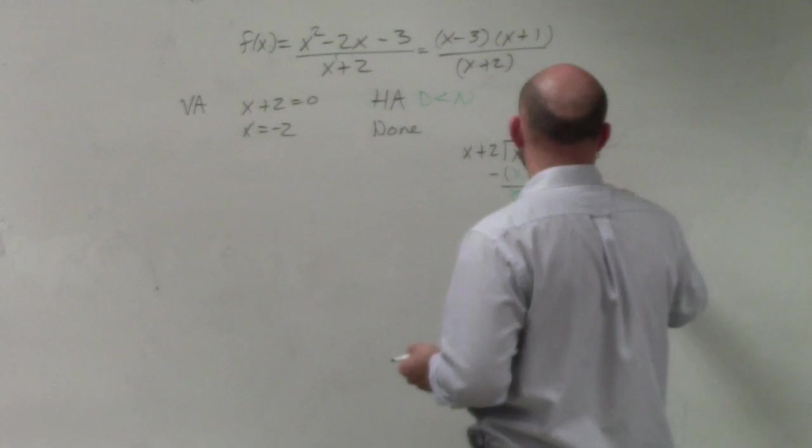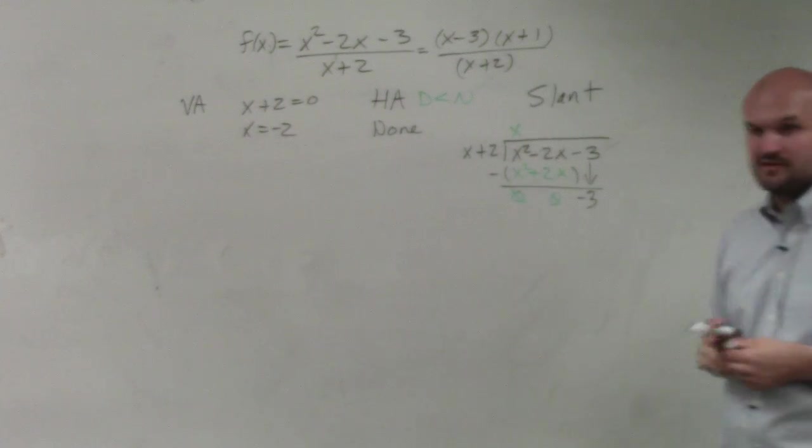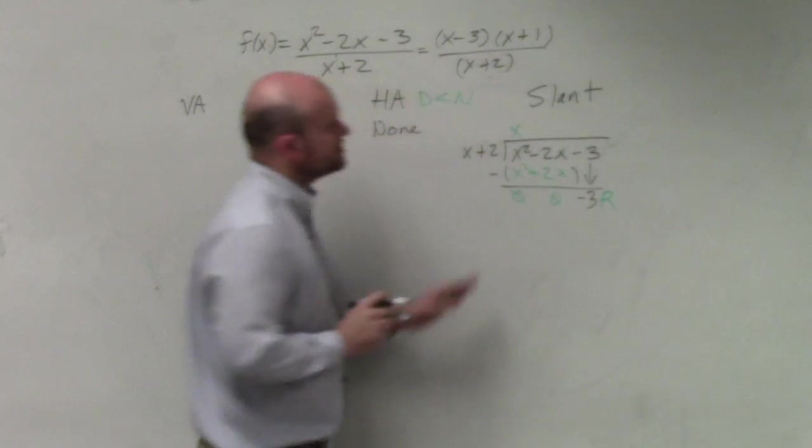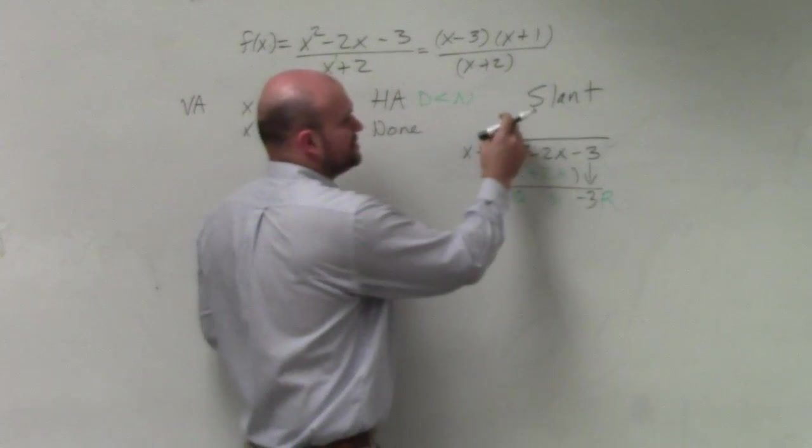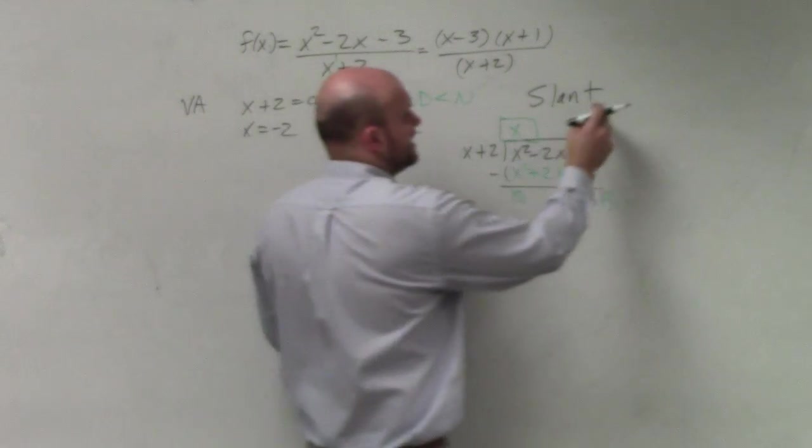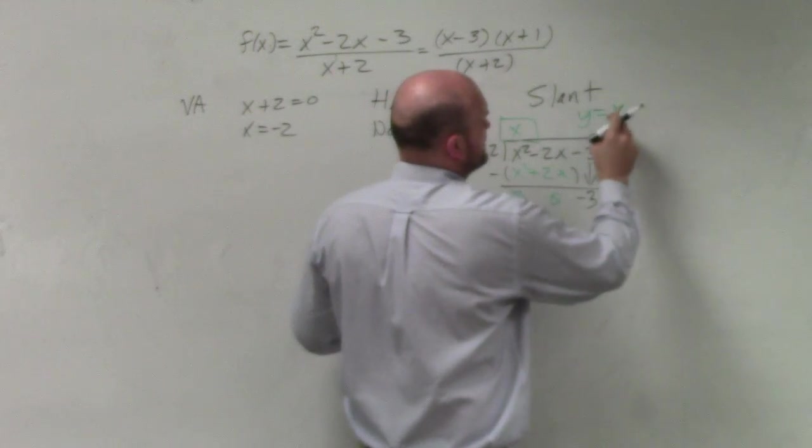Negative 2x minus 2x is 0. Bring down the negative 3. Does x divide into negative 3? Nope. So your slant asymptote is just your quotient. But it's actually a line, so we write it as y equals x.